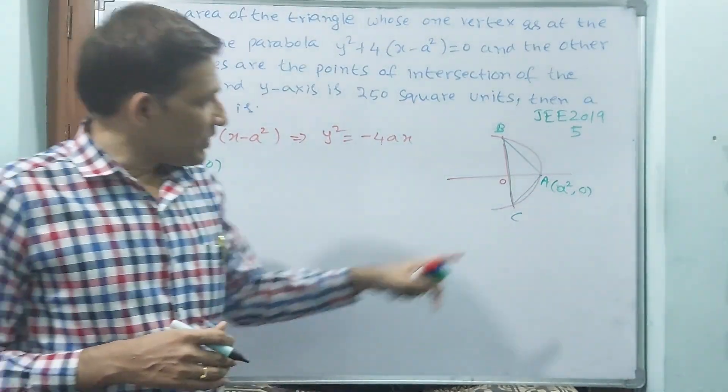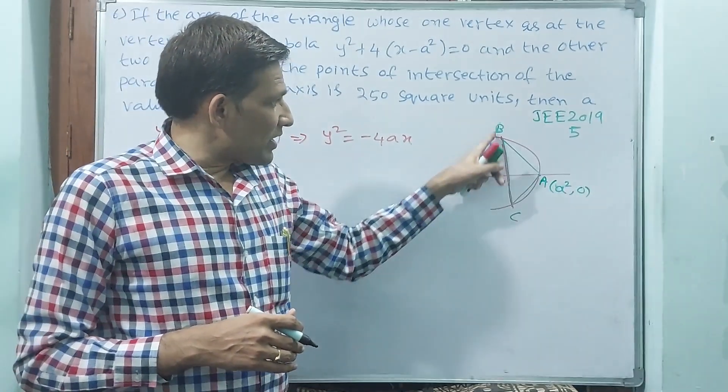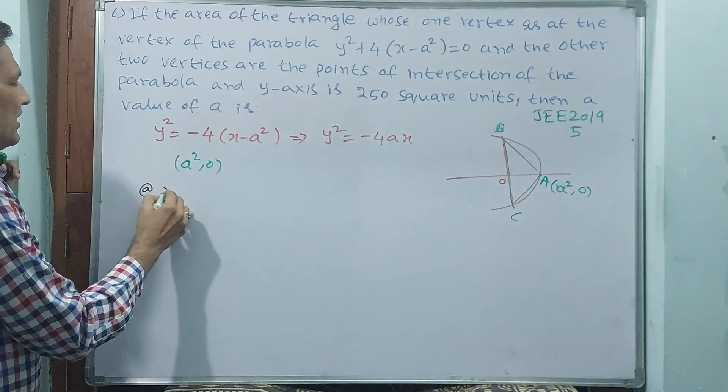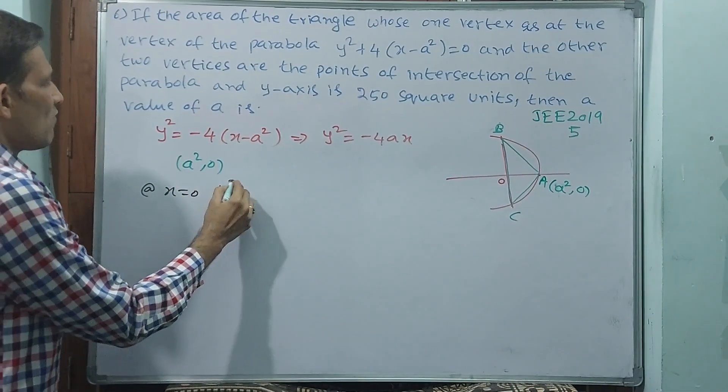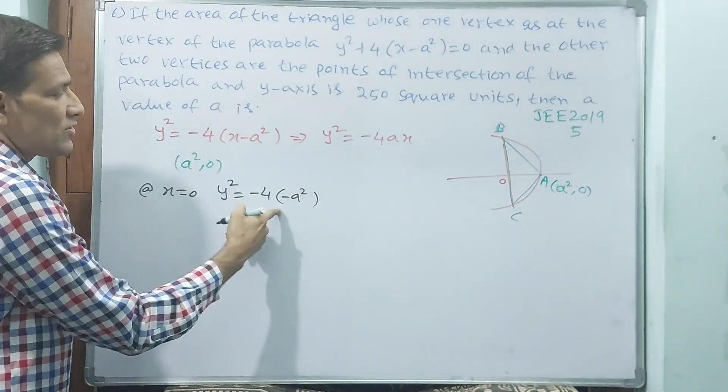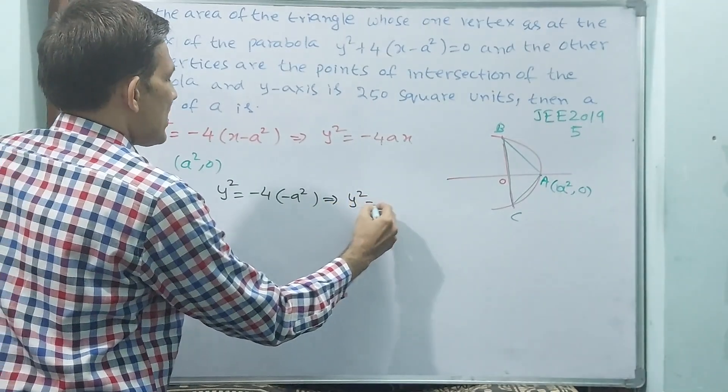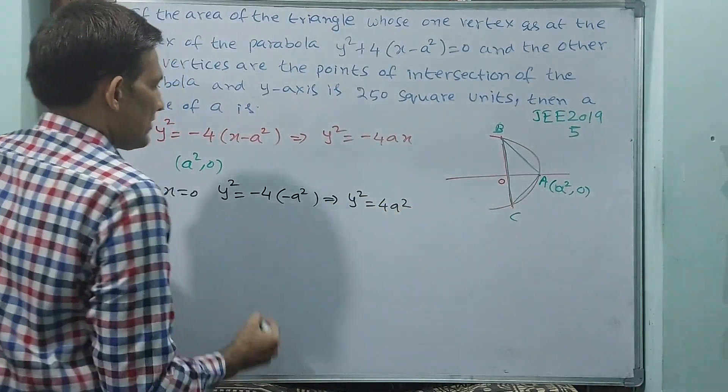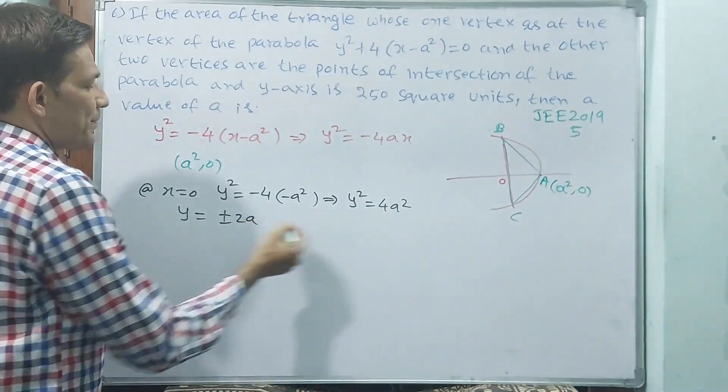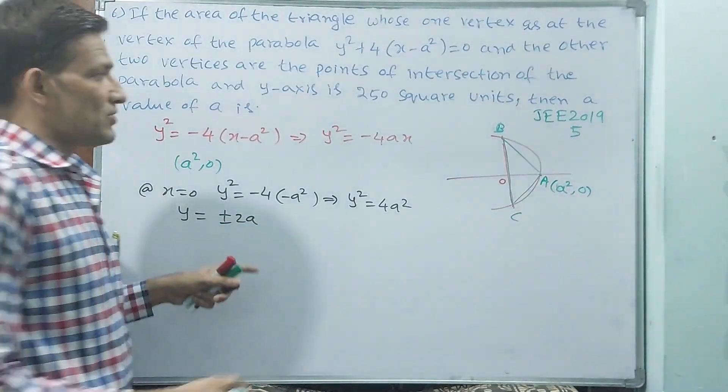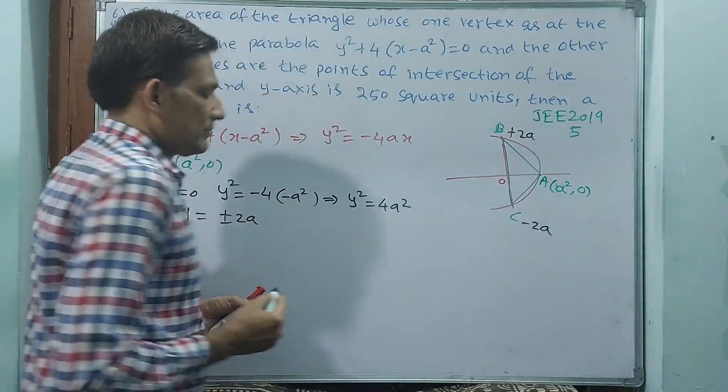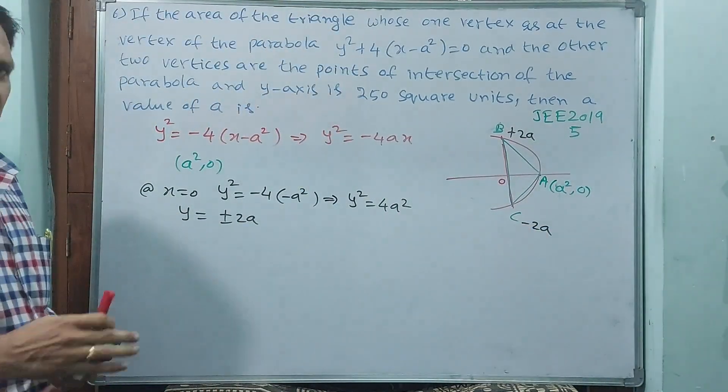See, what I must say. At x is equal to 0, what are these y values? Submit x is equal to 0, y square is equal to minus 4 into minus a square. Why? Because x is 0. It implies y square is equal to 4 a square. Y is equal to plus or minus 2 a. That means see, this is plus 2 a, this is minus 2 a.